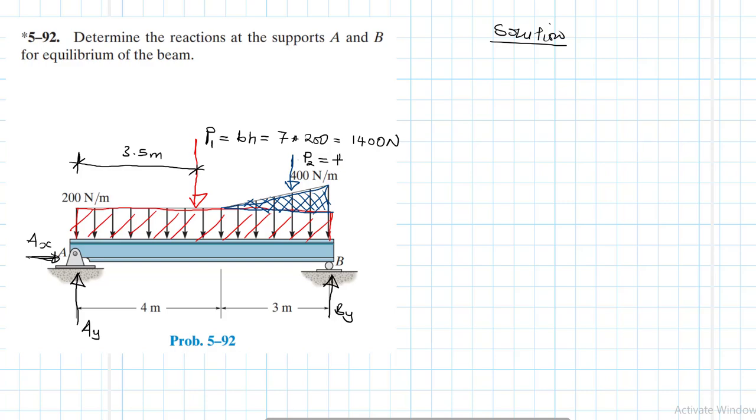P2 is going to be equal to half, formula for area BH, which is just equal to half. What's my B? The length of this triangle is 3. And what's this height? This height here is equal to the overall height at this point here, which is 400, minus the height of this rectangular block, which is 200. Therefore, this gives me 200. Therefore, this is going to be equal to half times 3 times 200, which gives us 300 newtons.